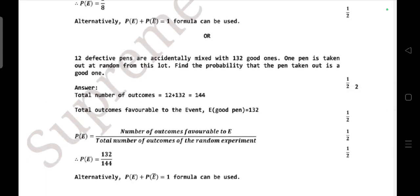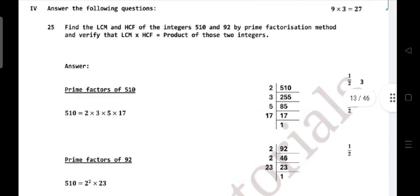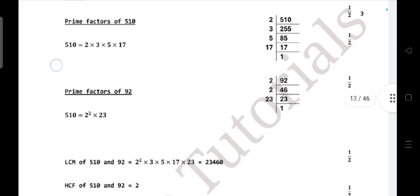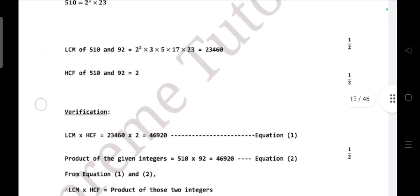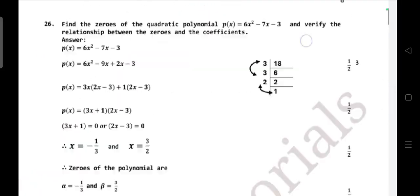Next main: three mark questions. Find the LCM and HCF of the integers 510 and 92 by prime factorization method and verify LCM × HCF = product of two numbers. Question number 26: find the zeros of the quadratic polynomial p(x) = 6x² - 7x - 3 and verify the relationship between zeros and coefficients.